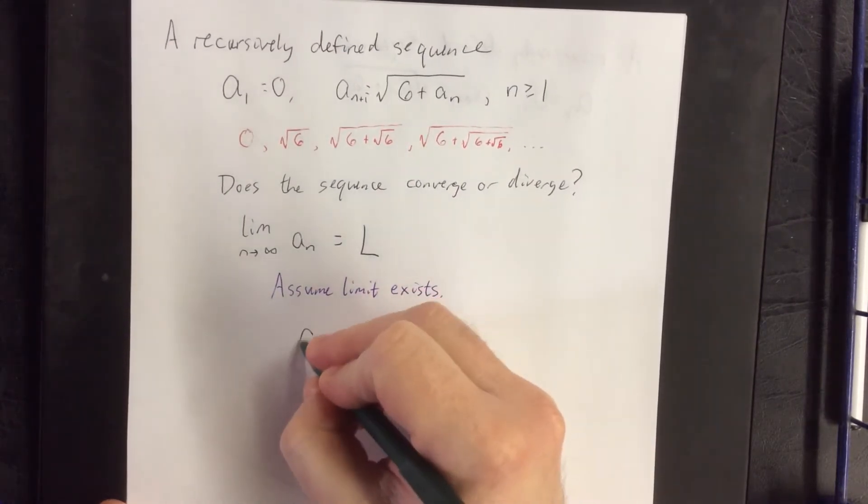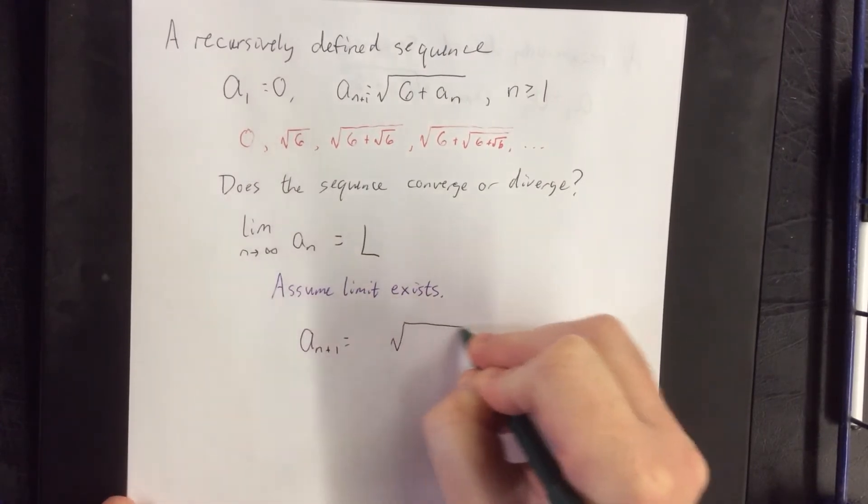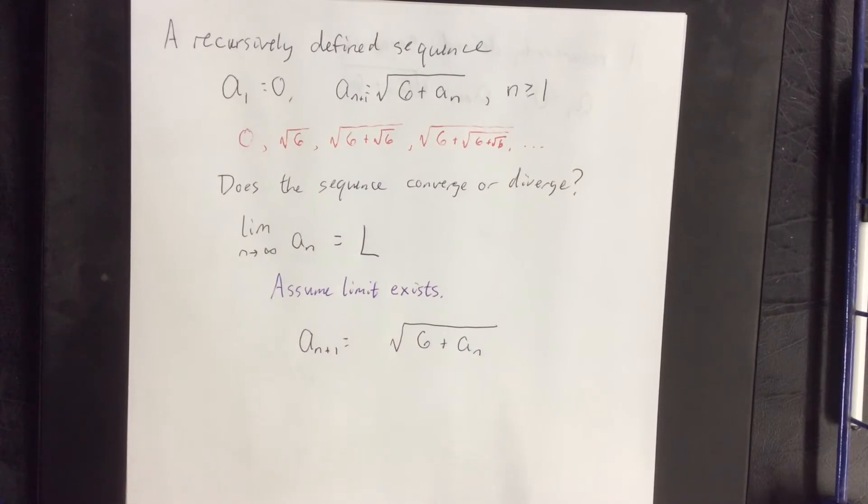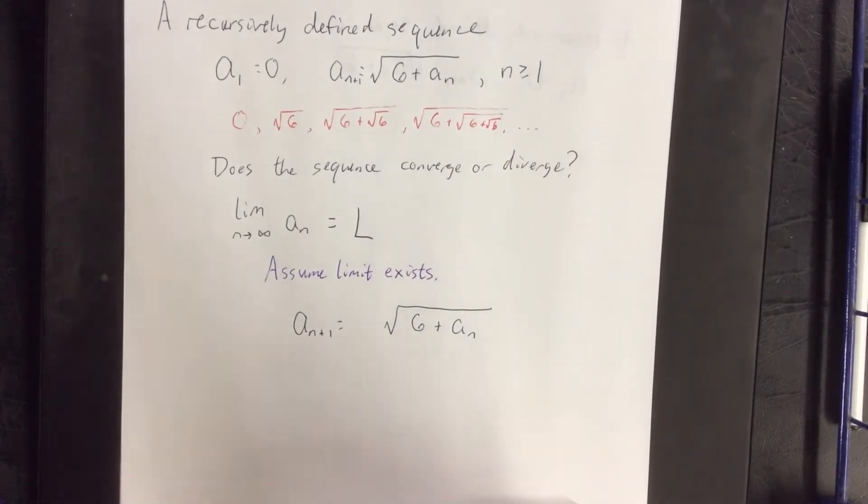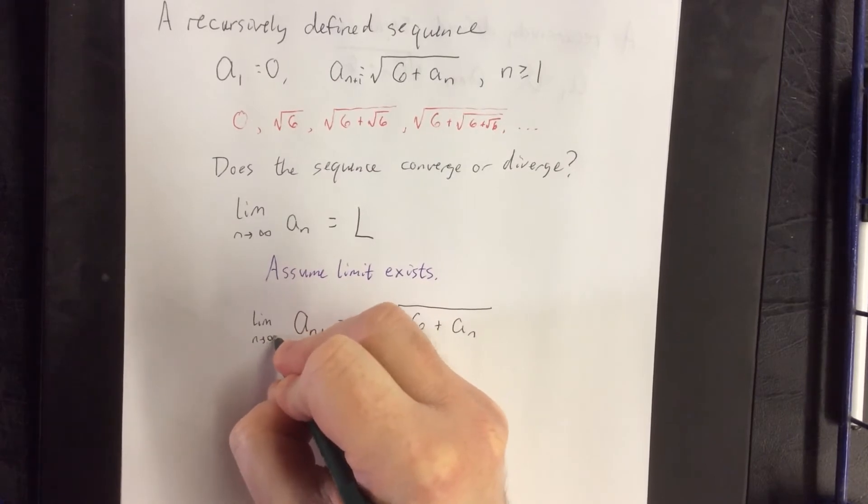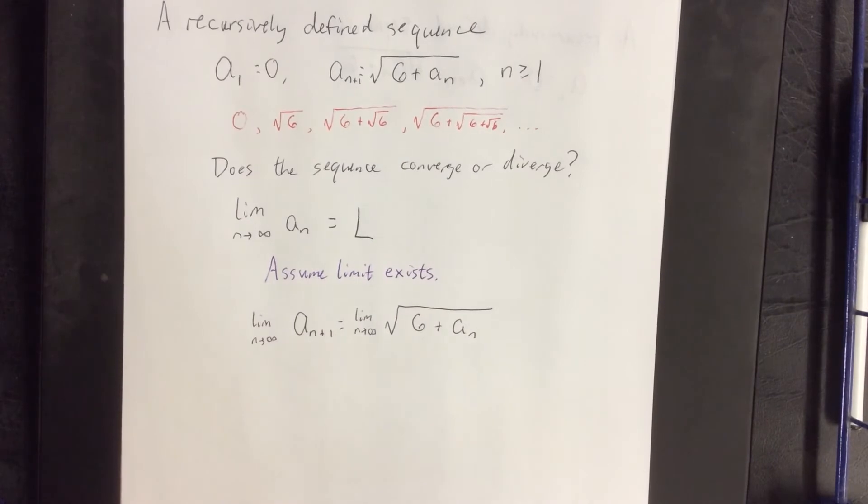Now based on the recursive definition, we said a sub n plus 1 is equal to the square root of 6 plus a sub n. What we're going to do is take the limit as n goes to infinity of both sides of this equation. Now we've already assumed that the limit exists and we've referred to it as L.